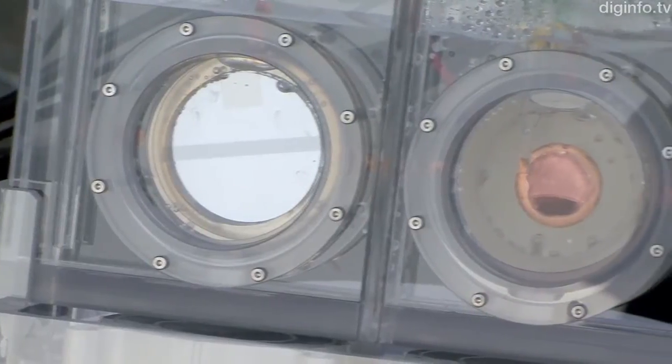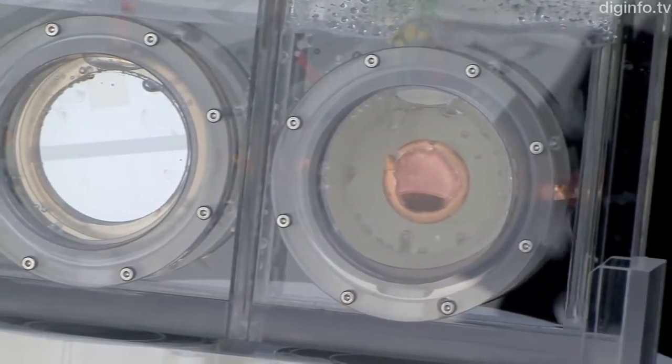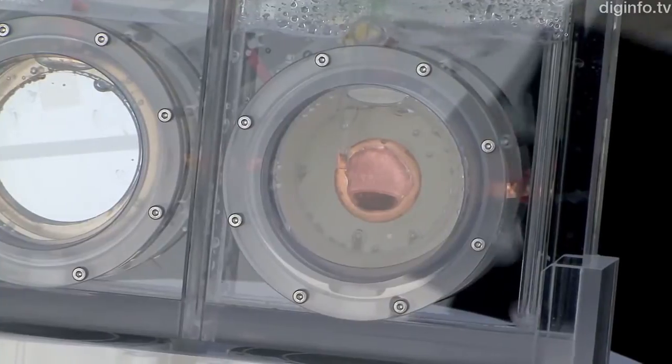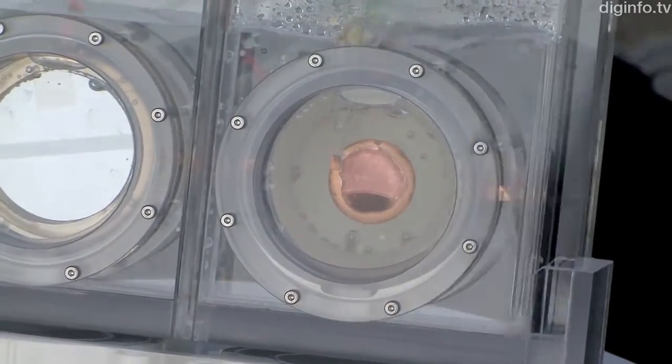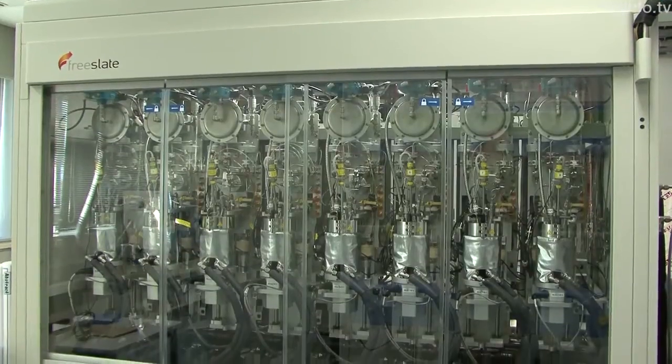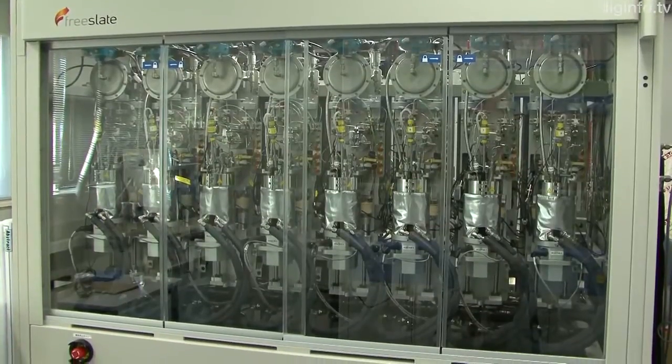In addition, by designing the material for the metal catalyst, it's possible to vary the type of organic substances produced. At Panasonic's lab, the latest machines have been introduced to analyze the substances.